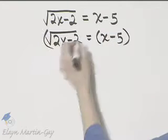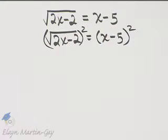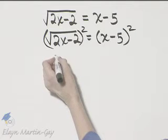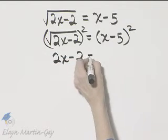We square the left side and we square the right side. Now the left side squared is just the radicand 2x minus 2.